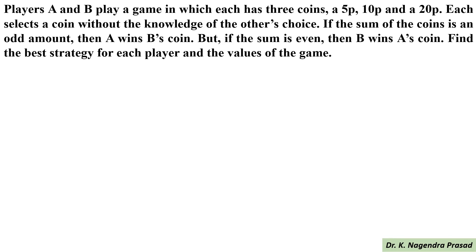Players A and B play a game in which each has 3 coins: 5 pies, 10 pies, and 20 pies coins. Each selects a coin without the knowledge of the other's choice. If the sum of the coins is an odd amount, then A wins B's coin; but if the sum is even, then B wins A's coin. Find the best strategy for each player and the value of the game.